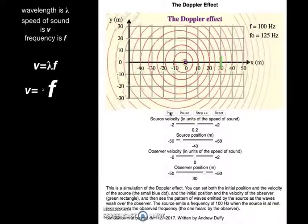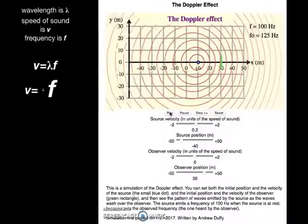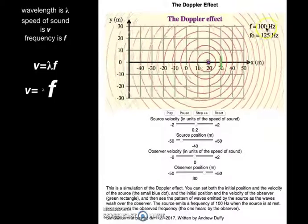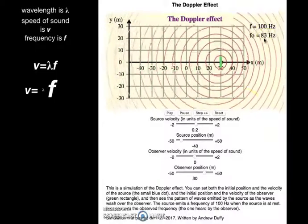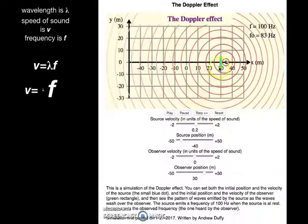Now there will also be something interesting that you'll notice when our source passes the observer. Notice everything is all consistent right now. Source emitting 100, observer hearing 125. But right now, did you see what happened at the instant it passed? The source is still emitting the same sound that it always did, but now the observer is hearing a much lower frequency. They're hearing only 83 hertz because now that they're behind the moving source, those waves are now being spread apart. So you have a longer wavelength, a bigger wavelength, which means a smaller frequency. So the frequency was reduced.